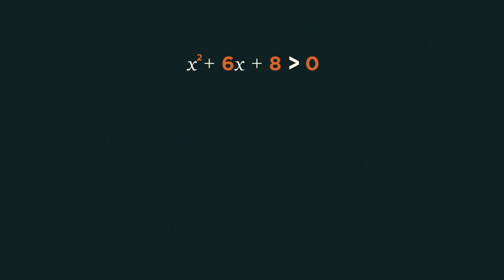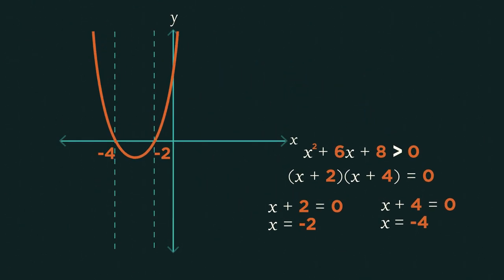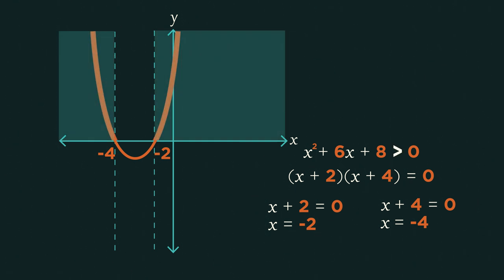Here's another example. Start by solving it. Roughly sketch the quadratic. Now, we want where the quadratic is more than 0. So shade where the quadratic is more than 0.